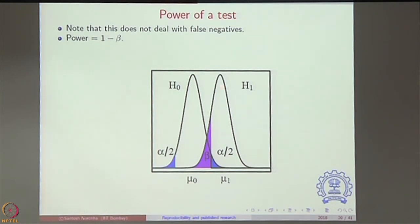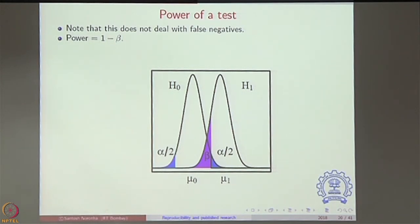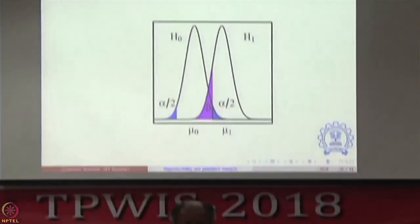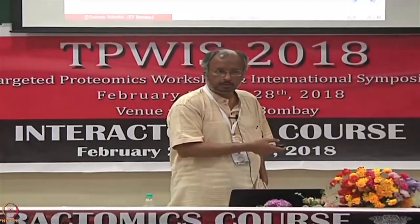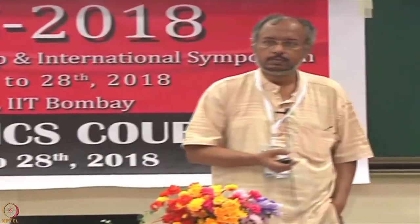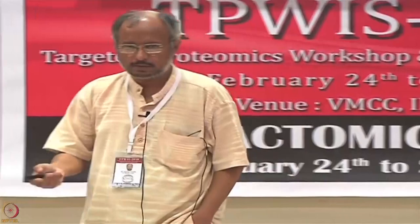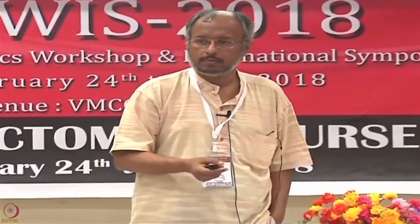If you now look at H1, H1 is allowed to be true only from this coordinate to the right — beyond that region you believe in H1; to the left you prefer to go with H0. But under H1, this area in purple corresponds to an error where H1 could have been the true hypothesis, you have gone with H0, and therefore you are committing a mistake by saying H0 is true when H1 should have been true. So there is a mistake — it is just like false positives and false negatives.